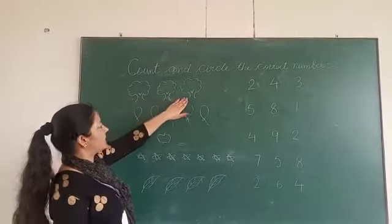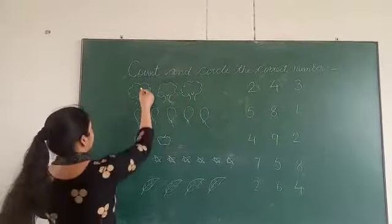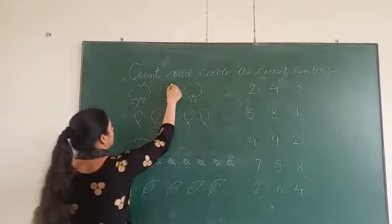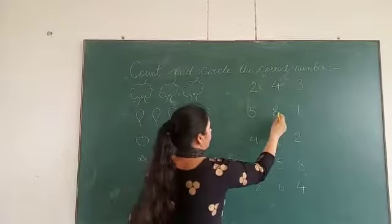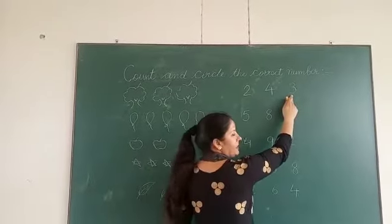How many trees are here? Count them. One, two, three. Where is three? Yes, here is three. Circle it.